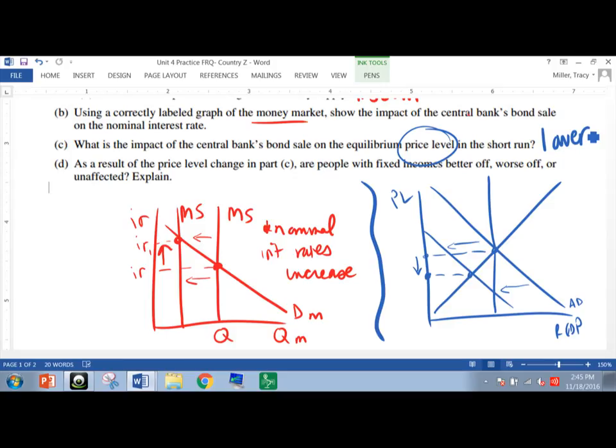The next part of the question builds on Part C. So you've got to get Part C right to do Part D correctly, usually. As a result of the price level in Part C, are people with fixed incomes better off, worse off, or unaffected? Explain. Well, a fixed income means I earn the same amount of money every single month, regardless of whether or not prices fall or increase. So let's just say I'm earning $2,000 a week. If I all of a sudden am living in an economy where everything fell in price, my $2,000 suddenly has more purchasing power. So I'd be better off. And it's because my $2,000 has more purchasing power now that everything is less expensive.